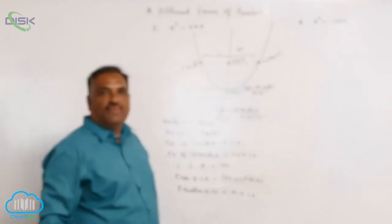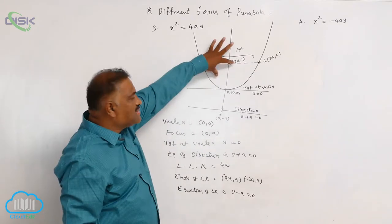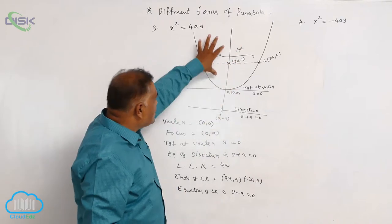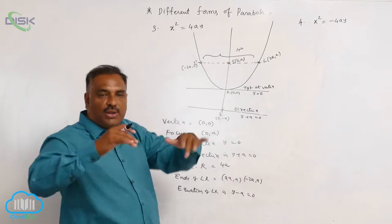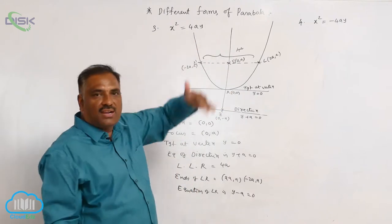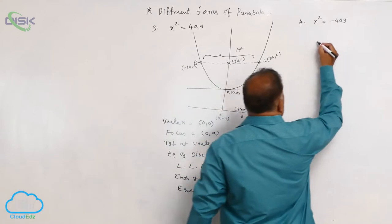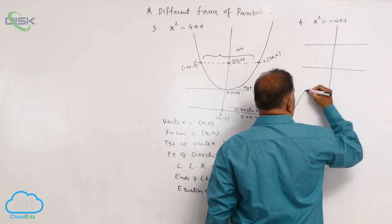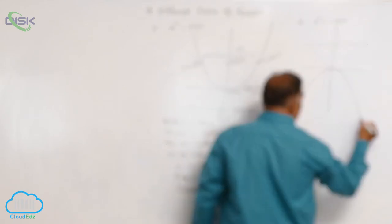One more parabola is x squared = -4ay. If the upward parabola x² = 4ay is rotated by 180 degrees, it comes downward. That is why it is called a downward parabola.